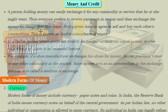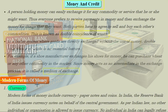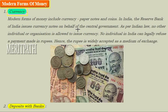Both parties have to agree to sell and buy each other's commodities — this is known as double coincidence of wants. In a barter system where goods are directly exchanged without the use of money, double coincidence of wants is an essential feature. For example, if a shoe manufacturer exchanges his shoes for money, he can purchase wheat or any other commodity in the market. Since money acts as an intermediate in the exchange process, it is called a medium of exchange.